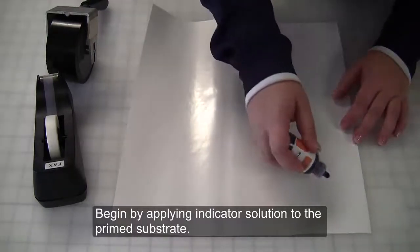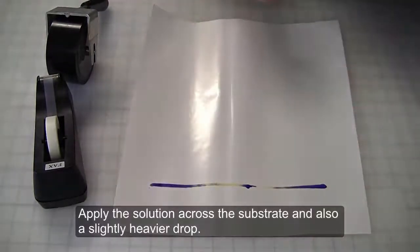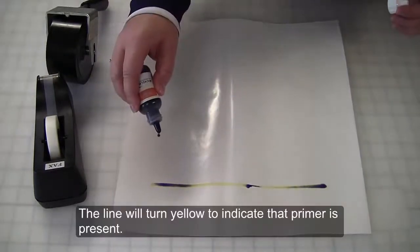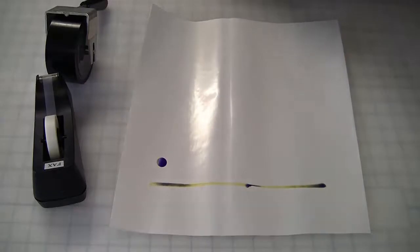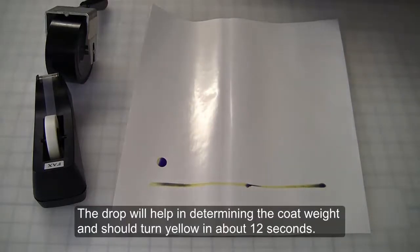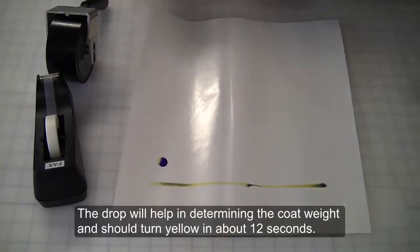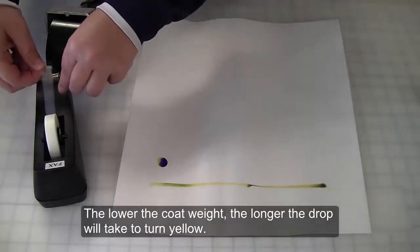Begin by applying indicator solution to the primed substrate. Apply the solution across the substrate and also a slightly heavier drop. The line will turn yellow to indicate the primer is present. The drop will help in determining the coat weight and should turn yellow in about 12 seconds. The lower the coat weight, the longer the drop will take to turn yellow.